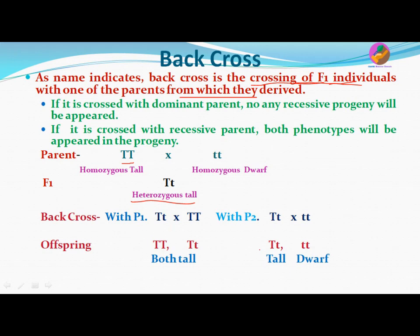In the second case, when we cross the F1 offspring with the recessive parent, it gives rise to two progenies: the first progeny is heterozygous tall, and the second progeny is a dwarf plant. So this is called back cross.